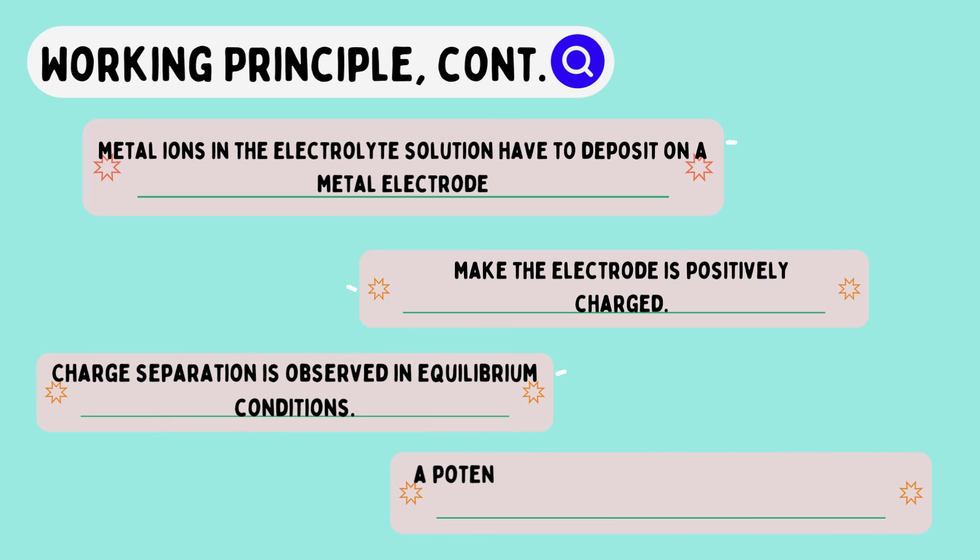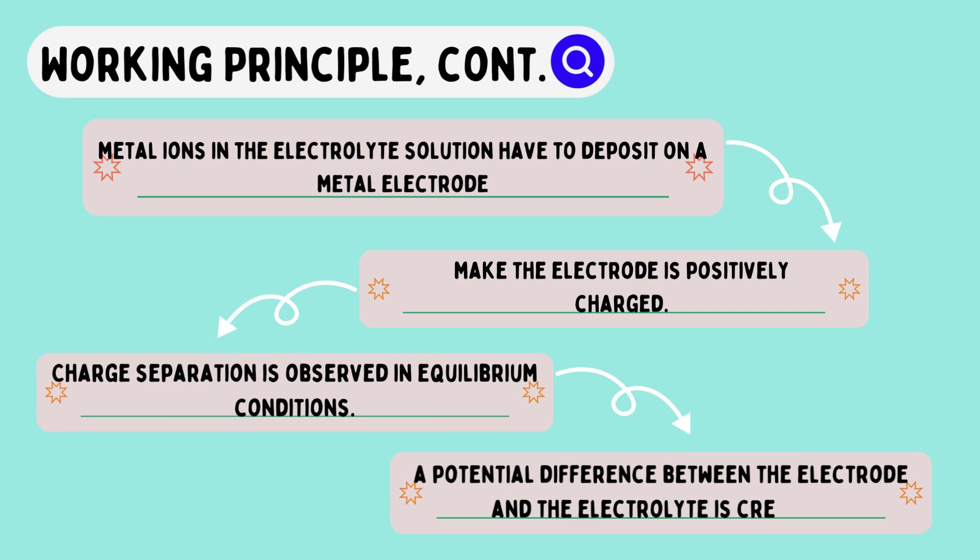Charge separation is observed in equilibrium conditions. Electrode can be positively or negatively charged depending on the tendencies of two opposing reactions. As a result, a potential difference between the electrode and electrolyte is created.